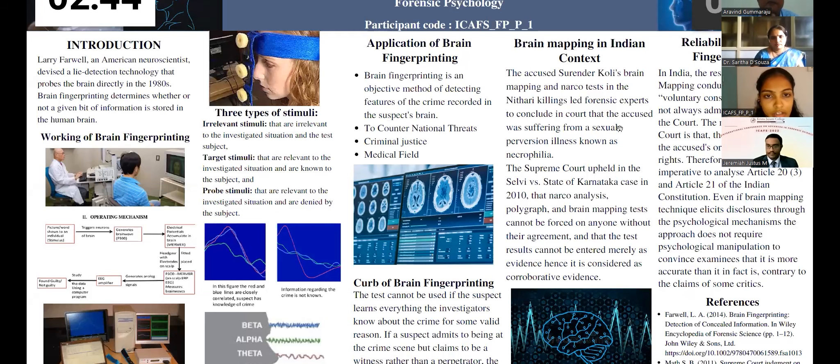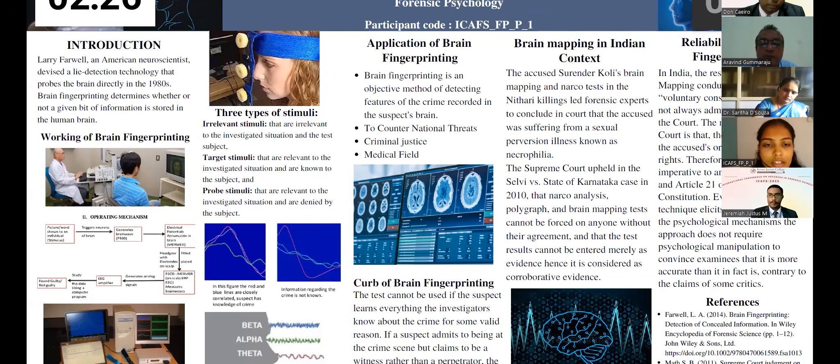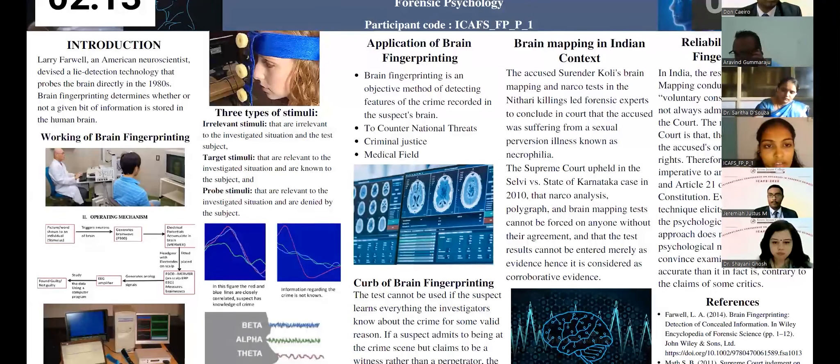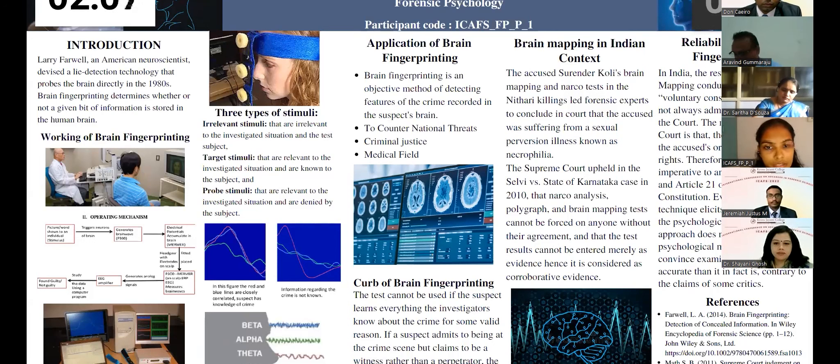Applications of brain fingerprinting are, it is an objective method of detecting features of crime recorded in the suspect's brain. It helps in criminal justice and also in medical field, also to counter national threats. Whereas the limitations of this test is that it cannot be used if the suspect learns everything the investigations know about the crime for some valid reasons. If a suspect admits to being at the crime scene, but claims to be a witness rather than a perpetrator, the fact that he knows the information about the crime is irrelevant. Other limitations include it's costlier than other deception techniques like polygraph or narcoanalysis.